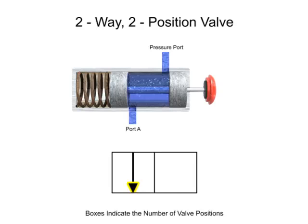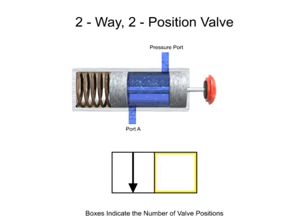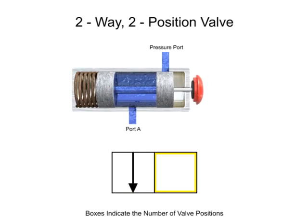A solid arrow indicates the direction of liquid flow. The first position of this valve allows fluid to flow from the pressure port to port A, so an arrow is drawn in the first box to indicate fluid flow. A T indicates that a port or way is blocked or closed. This valve's first position has no ports blocked, but its second position blocks both. The second box corresponds to the second position of the valve. Therefore, two T's are added to illustrate the lack of fluid flow in the second position.